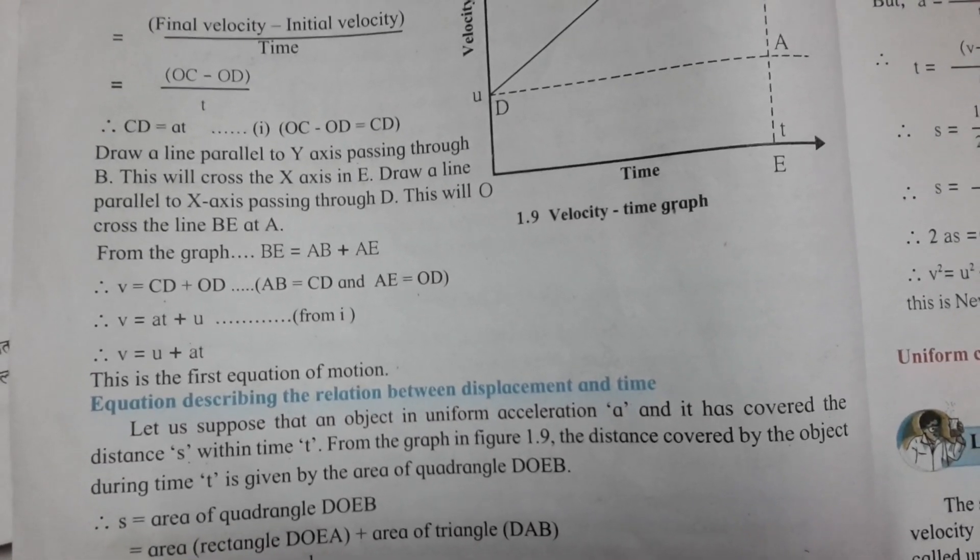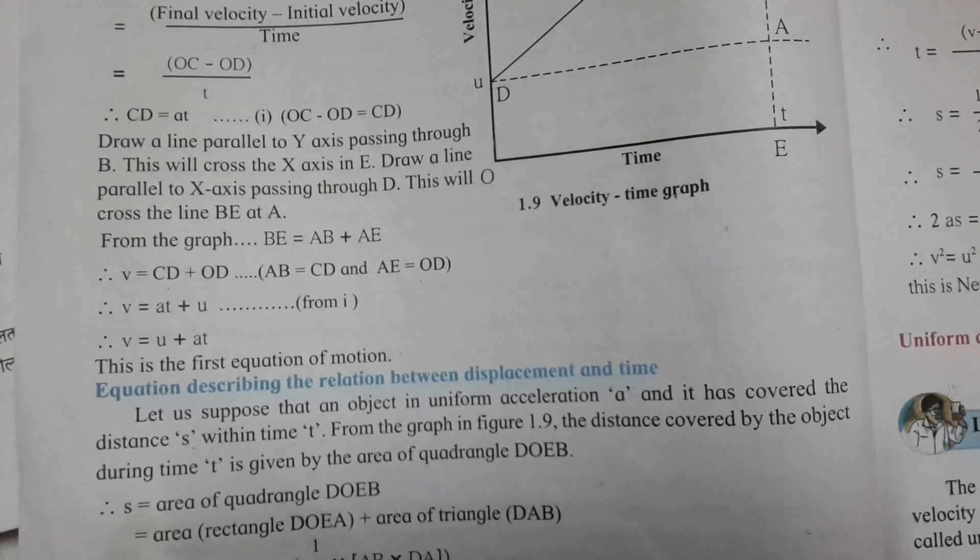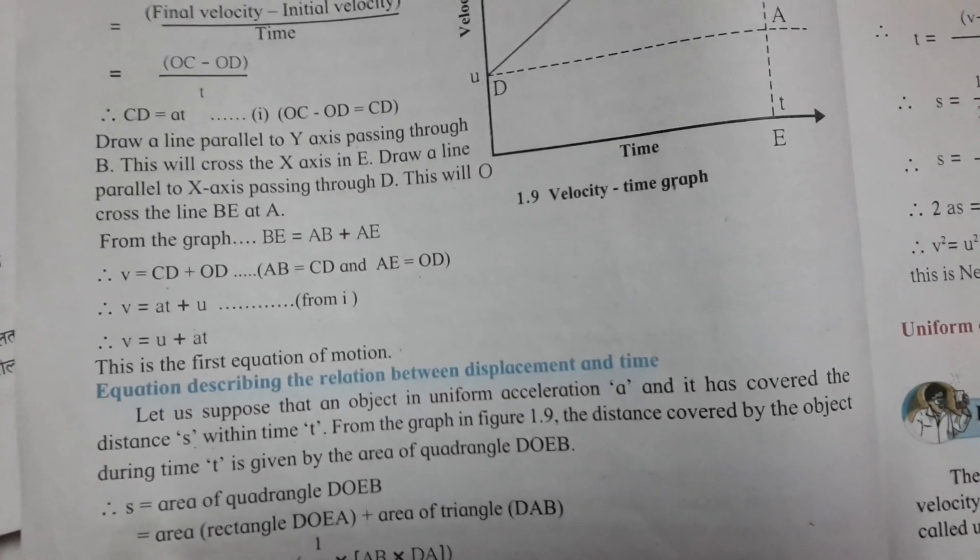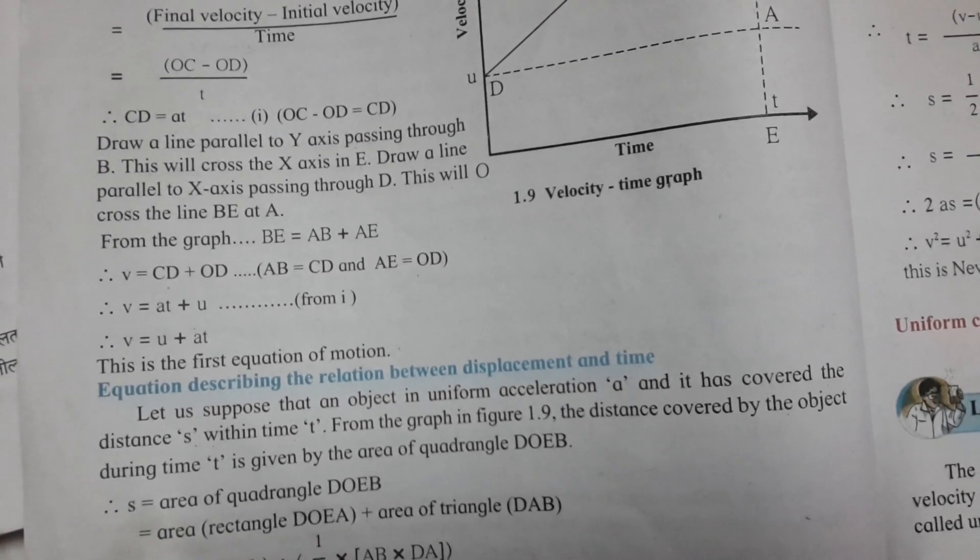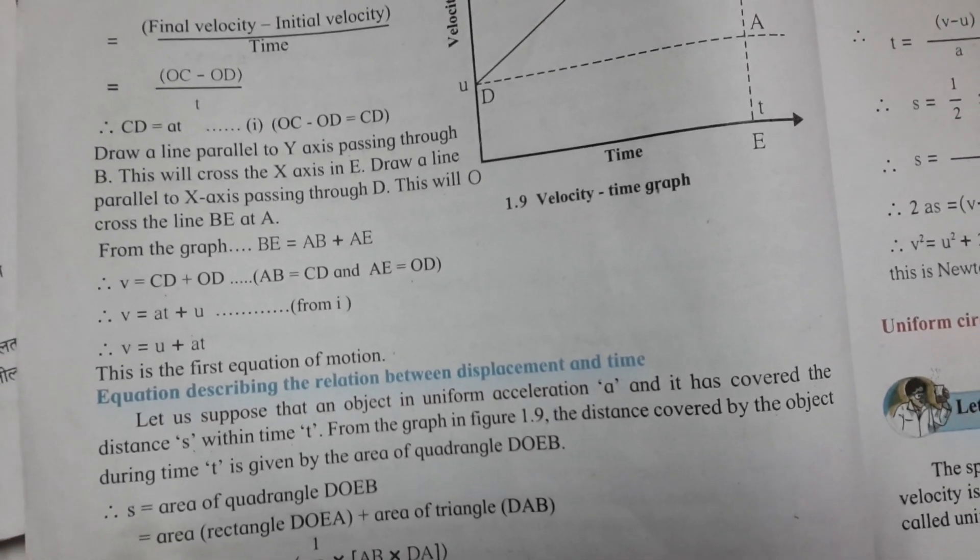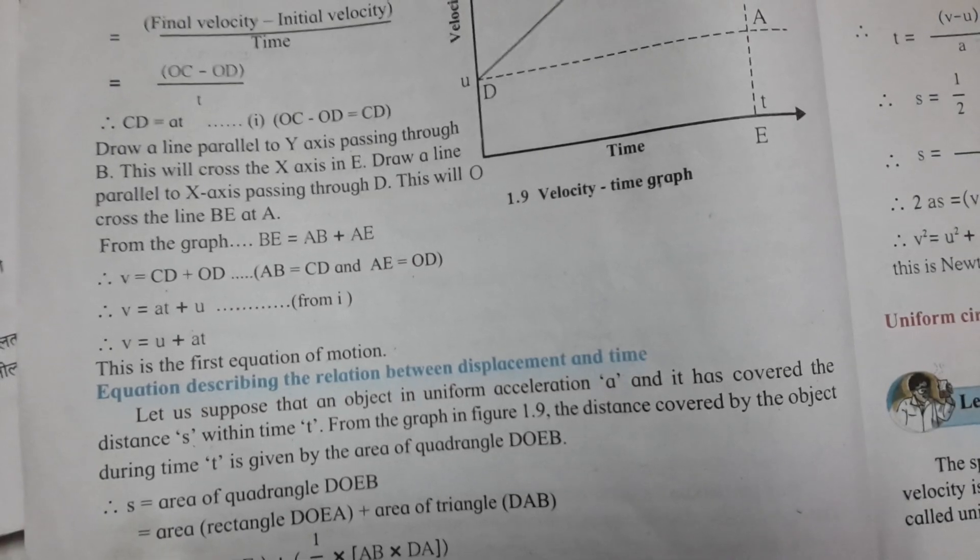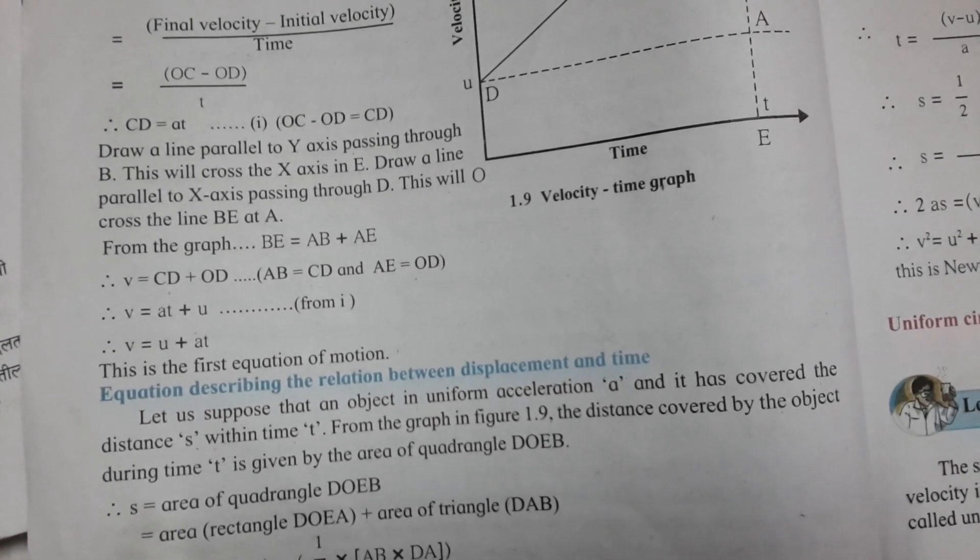Draw a line parallel to the X axis passing through B. Draw a line parallel to X axis passing through D. This will cross the X axis in E and cross the line BE at A.